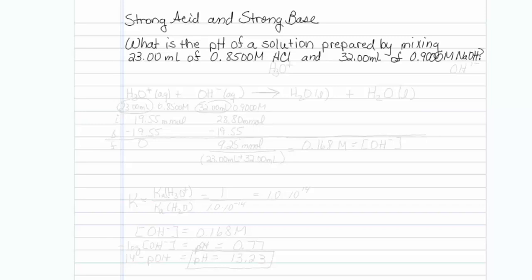This is how to determine the pH when you mix strong acid and strong base. What is the pH of a solution prepared by mixing 23 mL of 0.8500 molar HCl and 32 mL of 0.90000 molar NaOH?